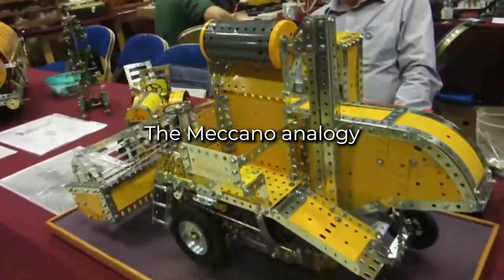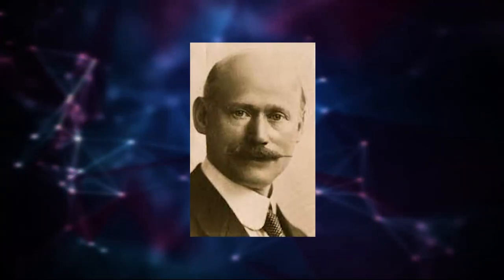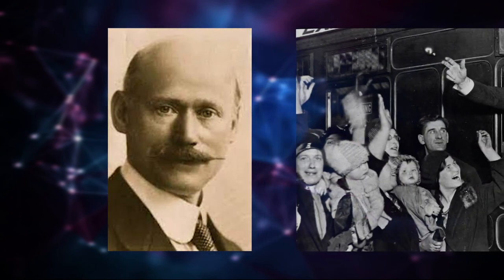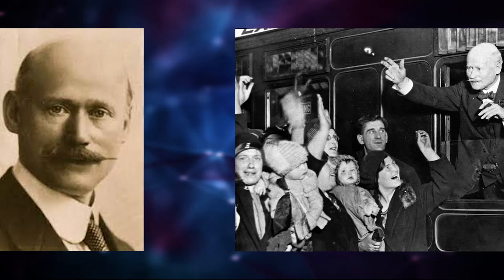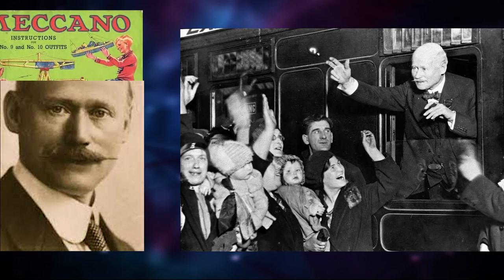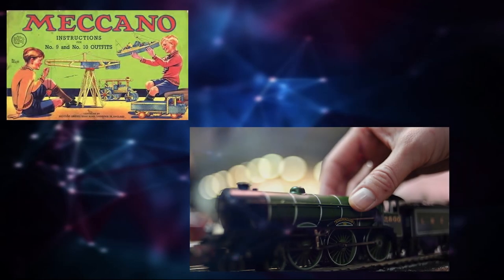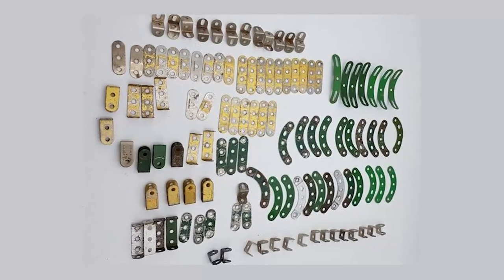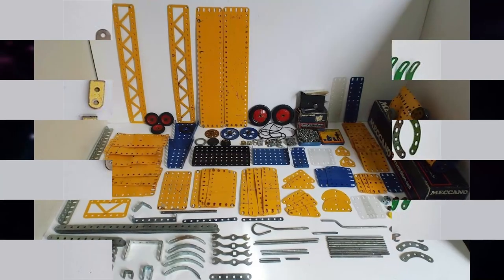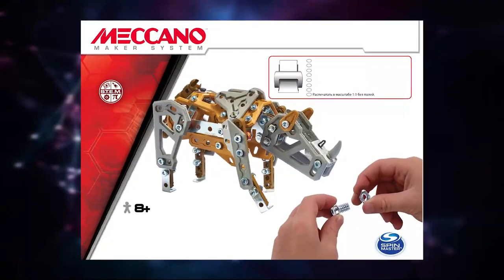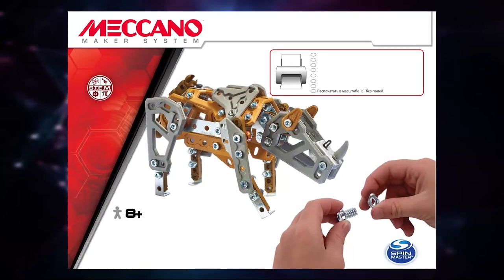Meccano is a construction game created in 1898 by Frank Hornby in Liverpool, England. Hornby was responsible for the invention and production of three of the most popular lines of toys. The Meccano system consists of reusable metal strips, plates, angle girders, wheels, axles and gears, and plastic parts that are connected using nuts and bolts. It enables the building of working models and mechanical devices.